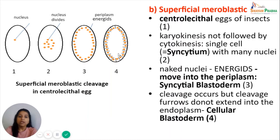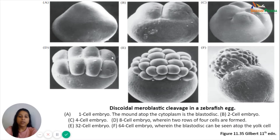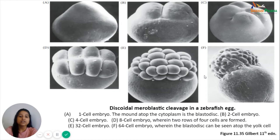This diagram shows discoidal meroblastic cleavage occurring in zebrafish. The first diagram shows a one-cell stage embryo with a small layer of blastodisc cytoplasm at the animal pole. Cleavage starts in this blastoderm area only to form two-cell, four-cell, eight-cell, thirty-two-cell, and ultimately the sixty-four-cell stage. The blastoderm remains present on top of the yolk cell as a separate layer.